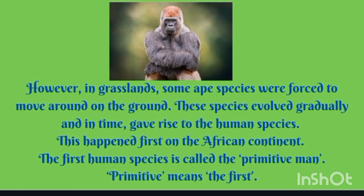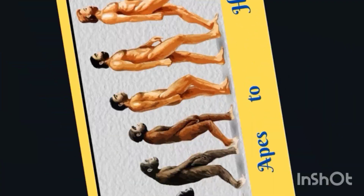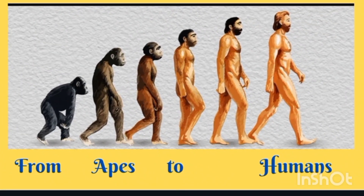I hope you have understood the lesson. The evolution of humans didn't occur in 1 or 2 years or even 100 or 200 years — it took thousands and thousands of years for apes to evolve into humans. If you want to know what happened next, subscribe to my channel, as I will be uploading a new video covering all the different stages from apes to humans. If you liked the video, please hit the like button and share it with family and friends. Till then, take care and bye-bye.